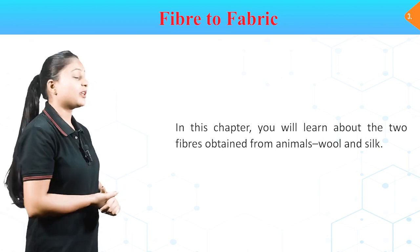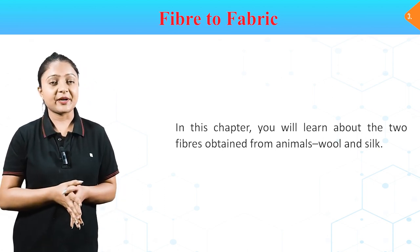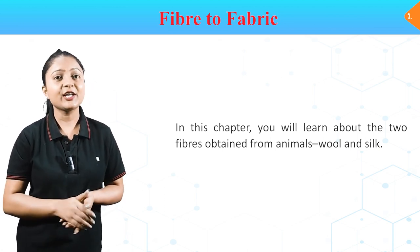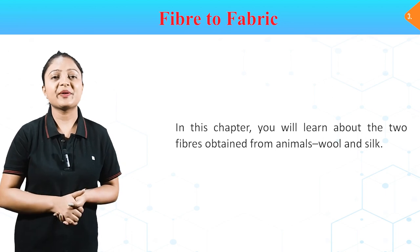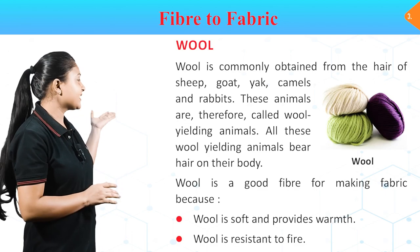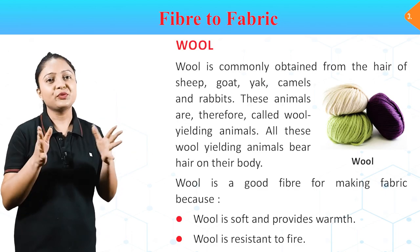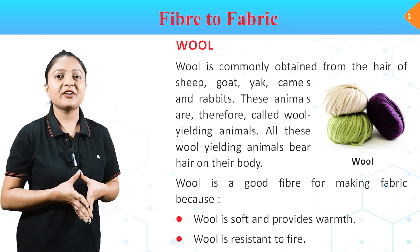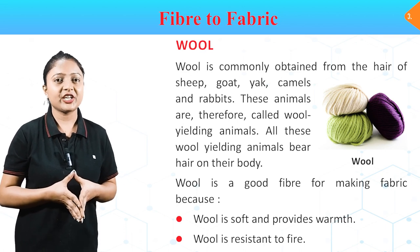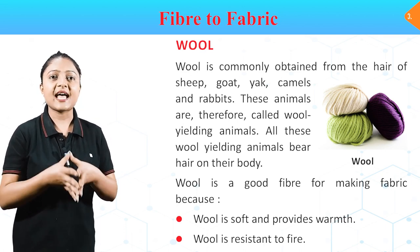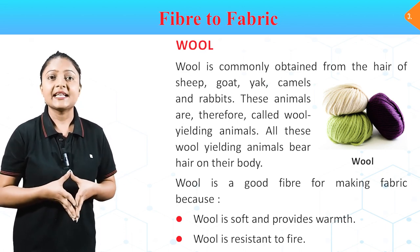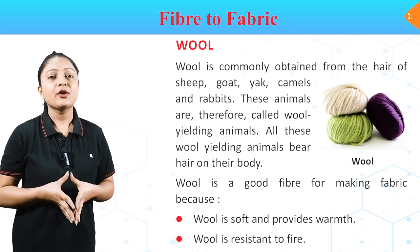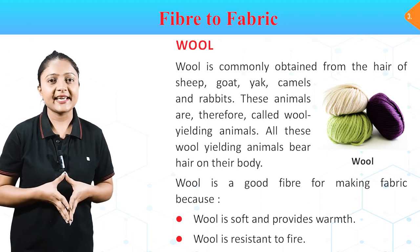इस chapter में हम दो fibers के बारे में पढ़ेंगे जो कि हैं wool and silk, और जो दोनों हमें animals से मिलते हैं. Let's start with wool. Wool is commonly obtained from hair of sheep, goat, yak, camels and rabbits. These animals are therefore called wool-yielding animals.